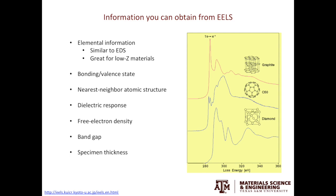Comparing to EDS, EELS is especially powerful when identifying low-Z elements such as boron, carbon, and nitrogen. When looking at the EELS results, there is no need to worry about the competition of characteristic X-rays and Auger electrons. Also, we don't have to worry about the absorption of soft X-rays. EELS can also provide information on the bonding and valence state of your material, the nearest neighbor atomic structure, dielectric responses, free electron density, band gap if there is one, and specimen thickness.